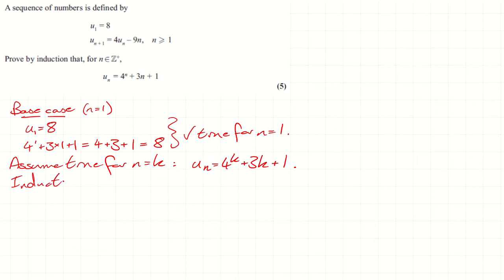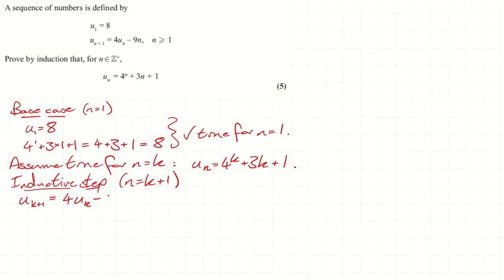Inductive step. This is the next one — this is k plus one. What is u_{k+1}? I'm not going to jump straight to the formula because we're not assuming it for k plus one. That is the thing we're trying to prove. We need to use what's given to us — the recurrence relation. That's the thing we know for certain. Don't be tempted to use the formula straight off — that's the thing we're trying to prove. We're just using the recurrence relation.